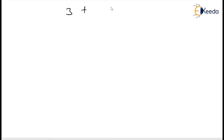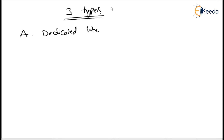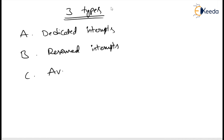So how can we classify these 256 interrupts? These 256 software interrupts are classified into 3 types: the first one is dedicated interrupts, the second one is reserved interrupts, and the third one is available interrupts.